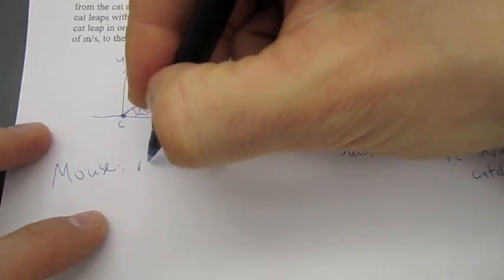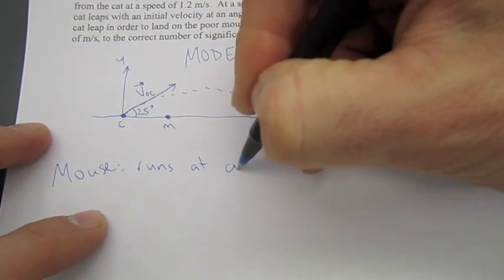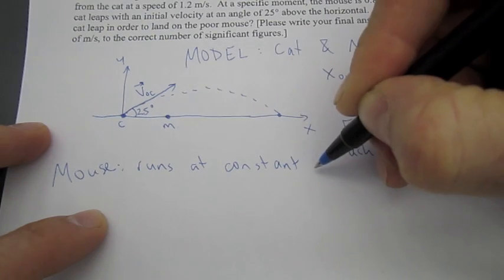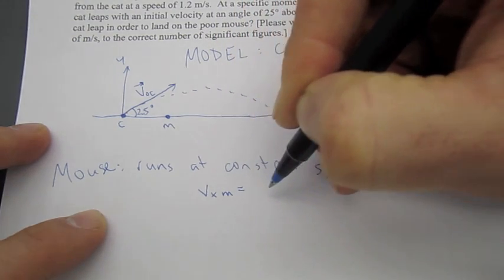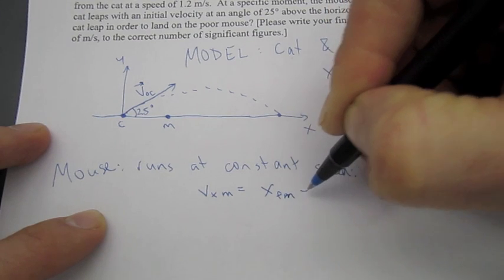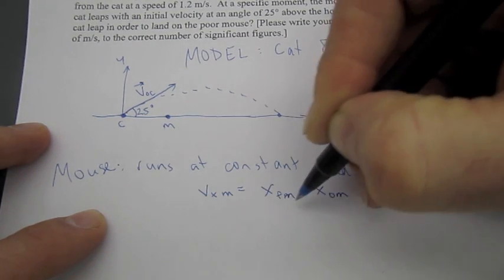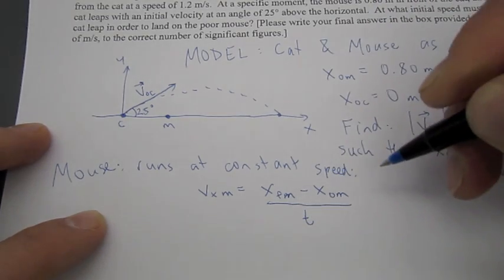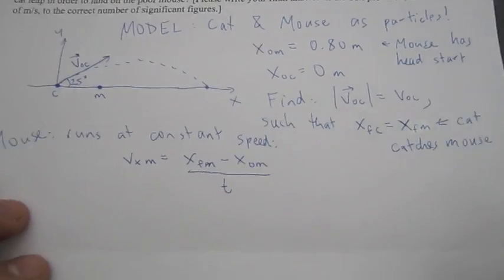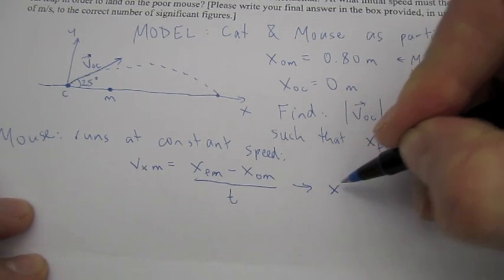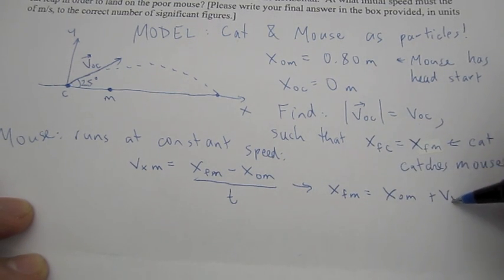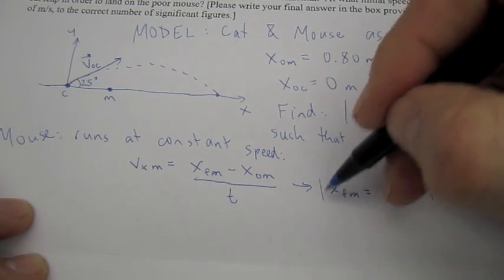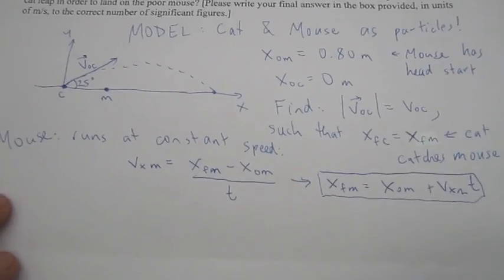Okay, so, we'll start with the mouse. First off, mouse runs at the constant speed. So, V sub X of the mouse is equal to X final of the mouse, minus X initial of the mouse, divided by the time involved. Okay, so, another way of looking at that, if you want to solve for the final, it is that the X final of the mouse is equal to X initial of the mouse, plus V X of the mouse times time. Okay, so, we'll save that for later, because we're going to set that equal to the final X position of the cat.